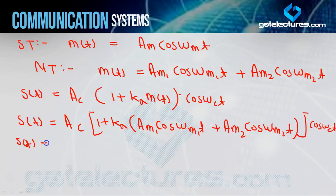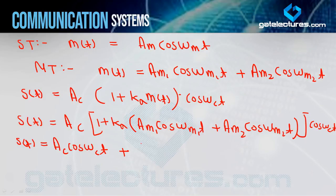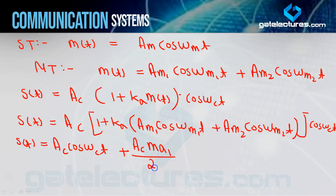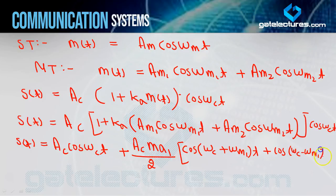अब अगर मैं इस equation को open करूँ, तो first term हो जाएगा: Ac·cos(ωc·t). फिर Ac·Ka·Am1·cos(ωm1·t)·cos(ωc·t) — और Ka·Am1 क्या होता है? Modulation index Ma1 होता है। तो हम लिख सकते हैं Ac·Ma1, और cos(ωm1·t)·cos(ωc·t) के लिए cosA·cosB formula = [cos(A+B) + cos(A-B)]/2 apply करेंगे। तो divided by 2 outside लिखकर: cos(ωc+ωm1)t + cos(ωc−ωm1)t मिलेगा।